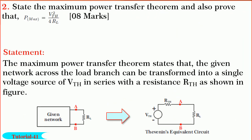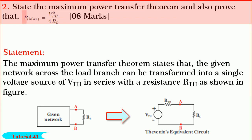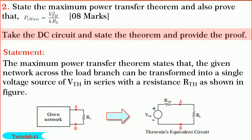Friends, next we shall solve the question on maximum power transfer theorem. In this question, we are required to state the maximum power transfer theorem and also prove that P_max is equal to V_th² divided by 4·R_L. Let me explain the strategy and thinking process. The question is straightforward — we can take the DC circuit, state the theorem in general, and provide the proof.